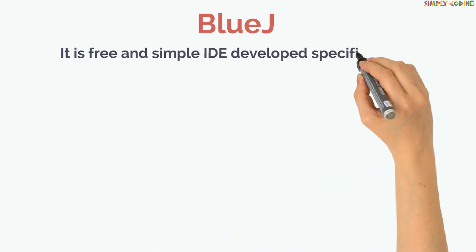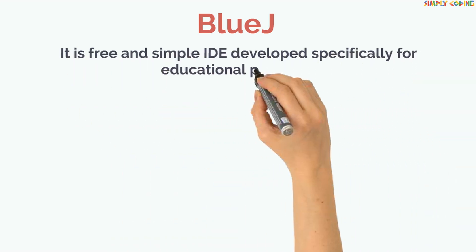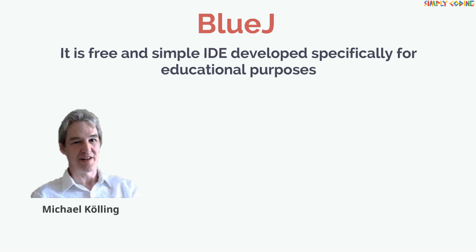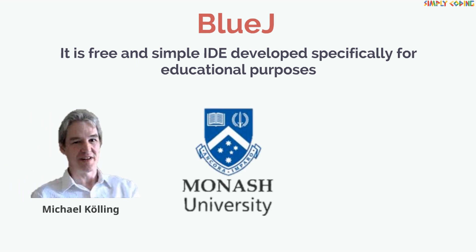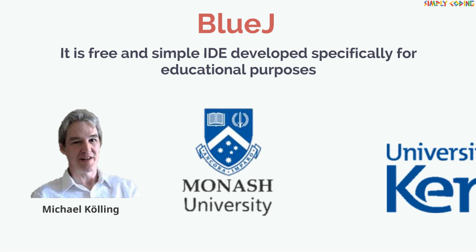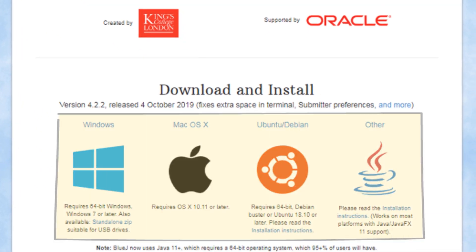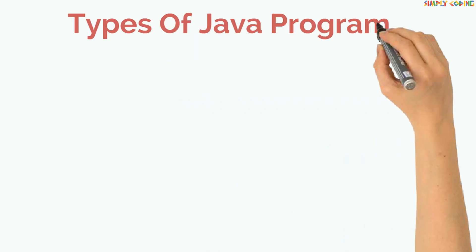We are going to use BlueJ for our programs as it is a free and simple IDE developed specifically for educational purposes. It was developed in 1991 by Michel Koling at Monash University and is now being supported and maintained by the University of Kent. You can Google BlueJ and download it from BlueJ's site. Download the file for your platform and use default settings to install.